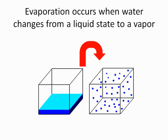One of the stages in the water cycle is evaporation. When water turns from a liquid state to a vapor, the process is called evaporation. According to Pearlman, the majority of the water that is evaporated comes from rivers, lakes, oceans, and seas all around the world, and it then travels to the atmosphere. In fact, water vapor can remain in the air for an estimate of 10 days before it is condensed into clouds.